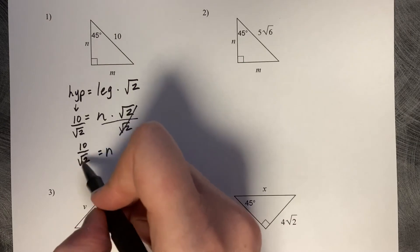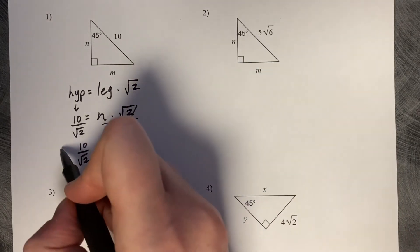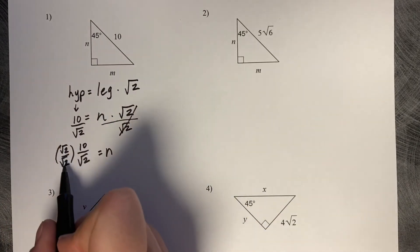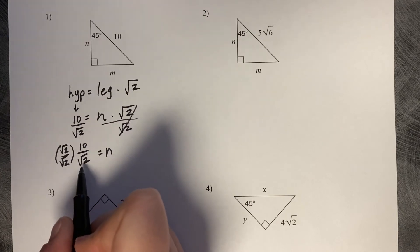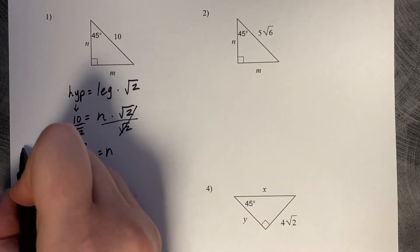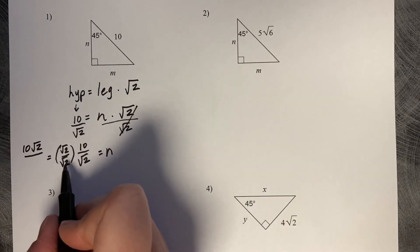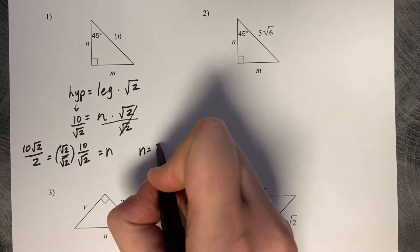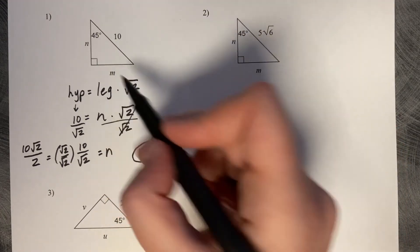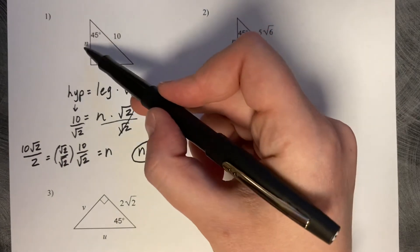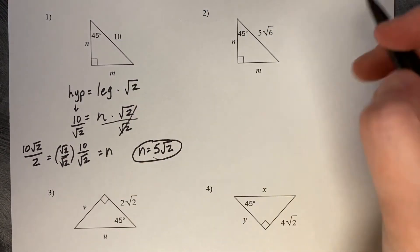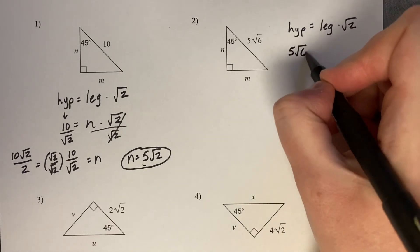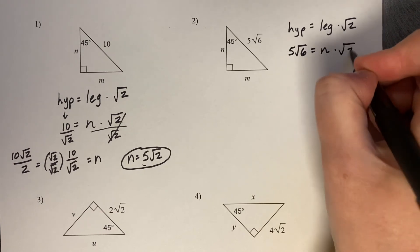We get n equals 10 divided by the square root of two, but that's not fully simplified. We rationalize by multiplying by the square root of two over the square root of two — chosen because square root of two times square root of two equals square root of four, which is two. So n equals ten square root of two divided by two, which is five root two. Therefore m also equals five root two. For the next example, the hypotenuse is five root six, so we set up five root six equals n times the square root of two.